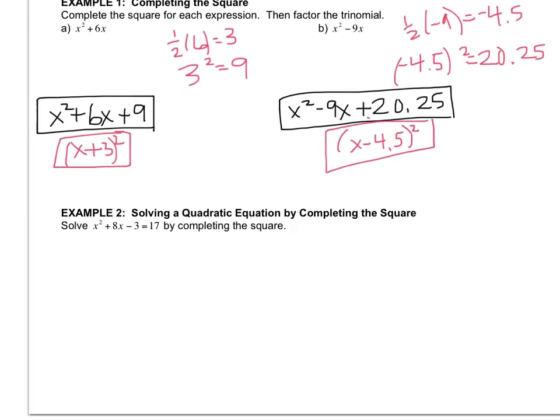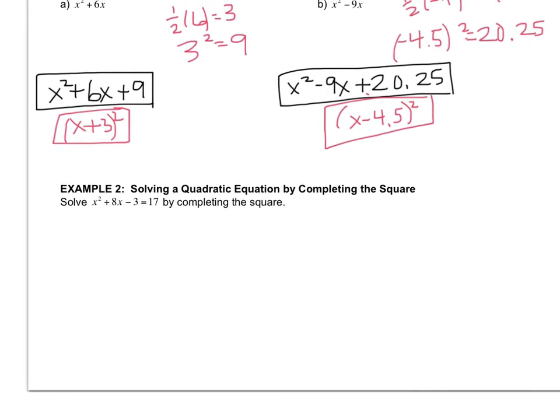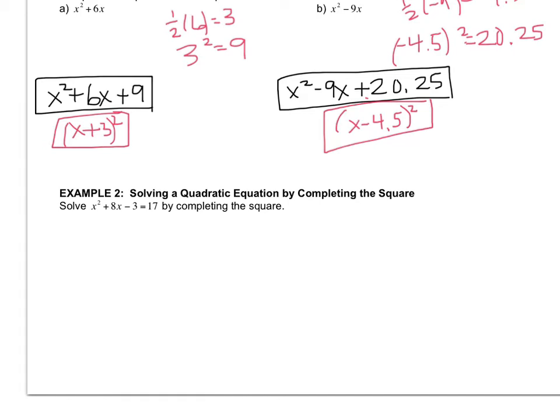All right, now we're going to take this technique and use it to solve an equation. So I have to solve this quadratic by completing the square. Well, the first thing that I want to do is I want to get this expression over here on the left to look like the ones over here where it was just two pieces equals a number. So I want to add 3 to both sides. So what I want to first start with is x squared plus 8x equals 20. And then it looks like what I'm used to dealing with because I can easily find half of b.